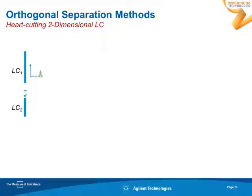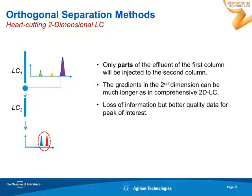The second type of 2D LC is heart-cutting 2D LC. With heart-cutting, you do not take the complete effluent of the first dimension — you select only a peak of interest, sample it, and inject it to a second column. Since you don't have the time constraints of comprehensive 2D LC requiring very fast gradients, you can use a longer column in the second dimension with longer runtimes. Only selected parts are analyzed in the second dimension, giving more information for that specific analysis, but you lose all information from the unsampled peaks.